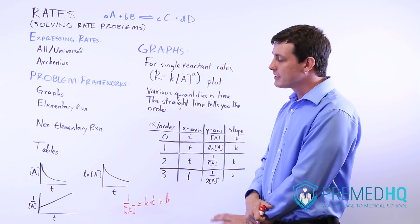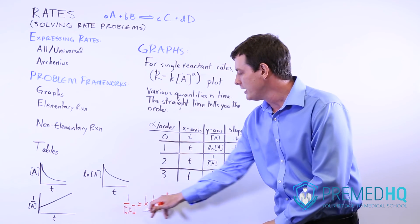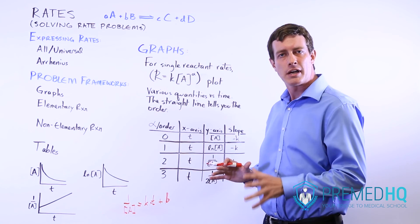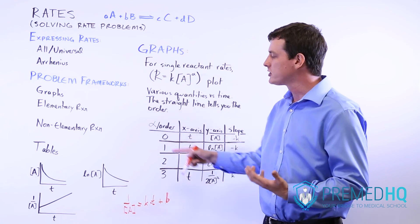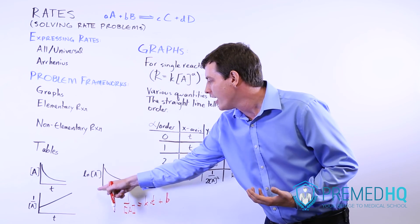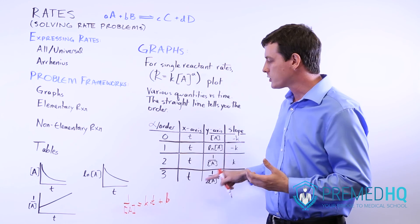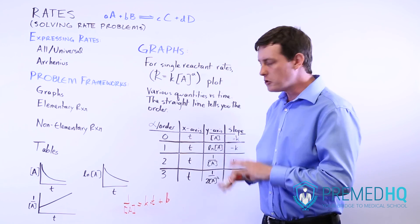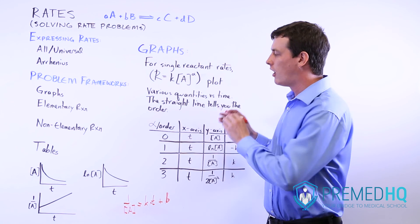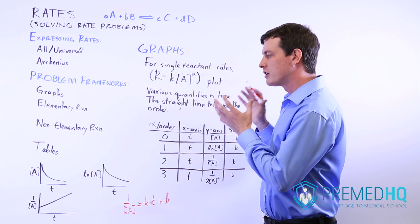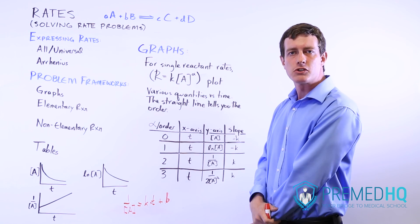And lastly, if it comes to a line equation like a y equals mx plus b, just be comfortable taking this as the y-axis, this as the x-axis, and the slope as k, and expressing it that way. And you should be good to go whenever rates are expressed in conjunction with graphs in your chemistry exams.